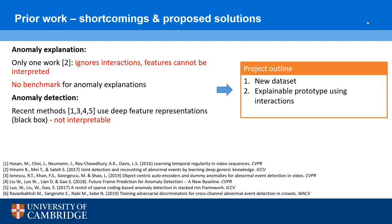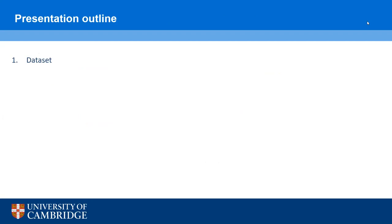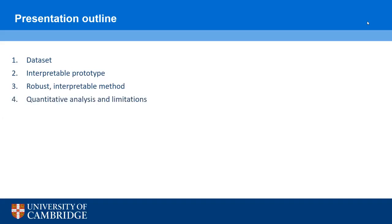I then tackle the problem of explainability by developing an explainable prototype that uses interactions directly to detect anomalies. The prototype is then seen to have some shortcomings, which I address by developing a second, more robust but still interpretable method. In the presentation today I will tell you about the dataset I developed, about the prototype and its shortcomings, how I address them by developing a second more robust but still interpretable method, and I will quantitatively analyze both methods and then draw some conclusions.